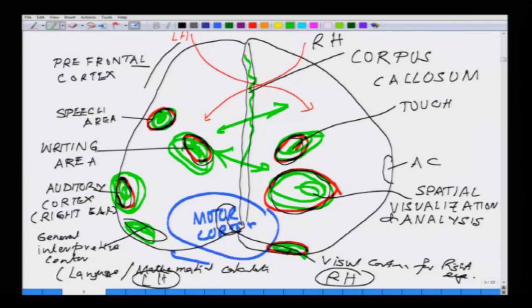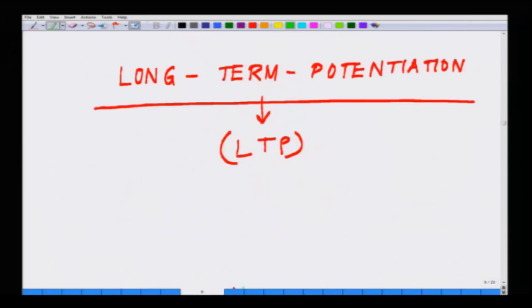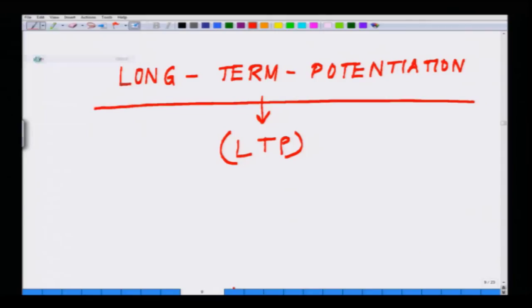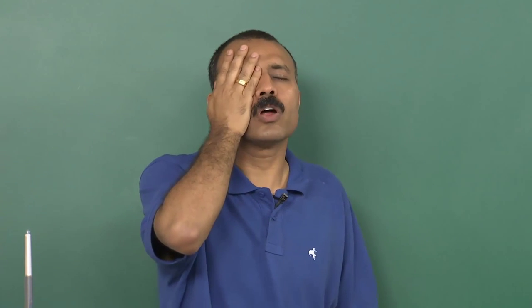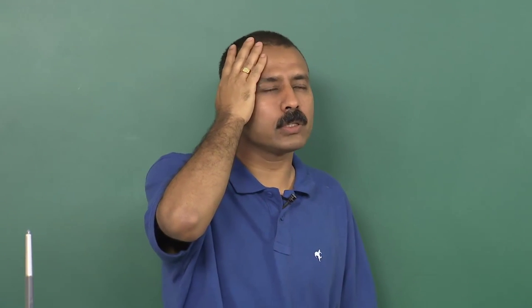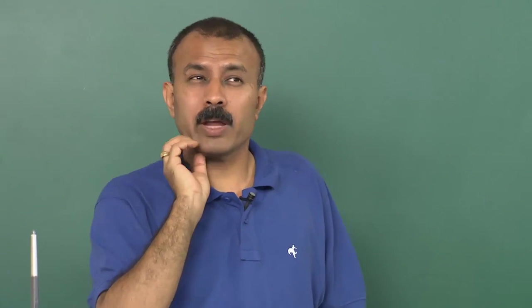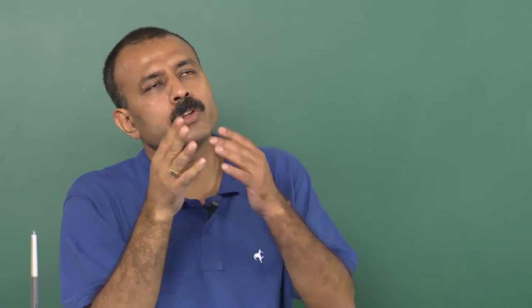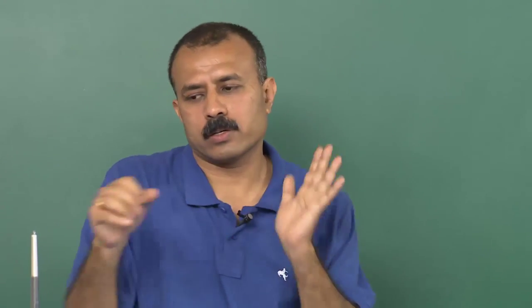This is what I wanted to highlight in terms of long-term potentiation and the memory acquisition process. I will close this class here. In the next class we will be talking about long-term depression, all the brain waves involved in it, a little about sleep, and then about neuronal computation and neurotransmitters. Thanks a lot.